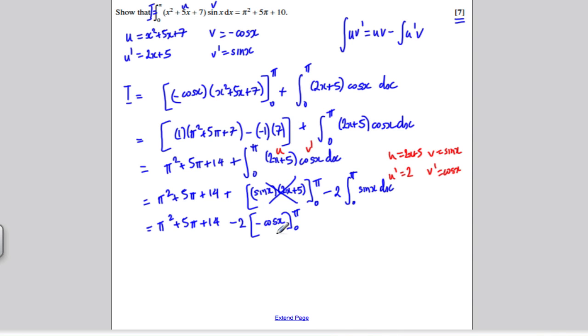We're nearly there. I get π squared plus 5π plus 14 minus 2 times (minus cos π minus minus cos 0). Cos π is minus 1, so minus cos π is plus 1. Cos 0 is 1, so minus cos 0 is minus 1. So 1 minus minus 1 is 2. Minus 2 times 2 is minus 4. Therefore π squared plus 5π plus 14 minus 4 equals π squared plus 5π plus 10 as required.